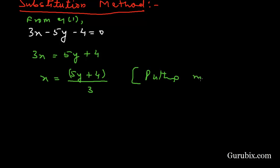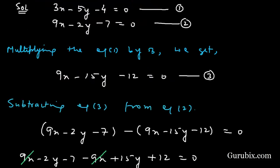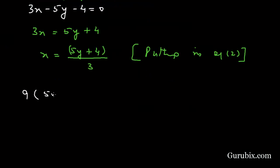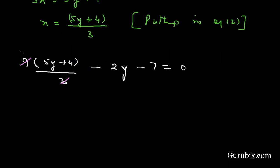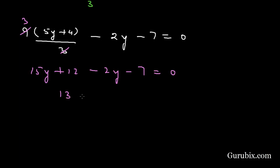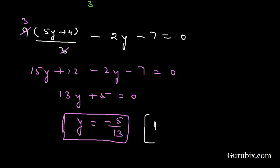Putting x = (5y + 4)/3 in equation number 2: 9·(5y + 4)/3 − 2y − 7 = 0. We cancel 3 with 9, giving 3·(5y + 4) − 2y − 7 = 0, which is 15y + 12 − 2y − 7 = 0. This gives 13y + 5 = 0, so y = −5/13.